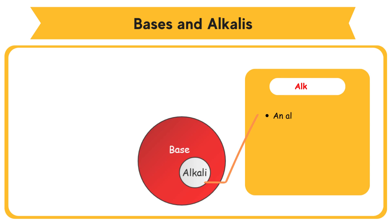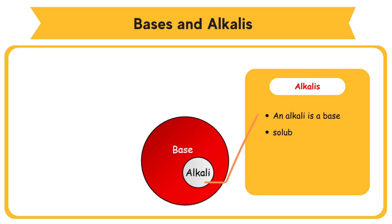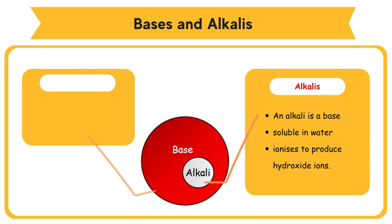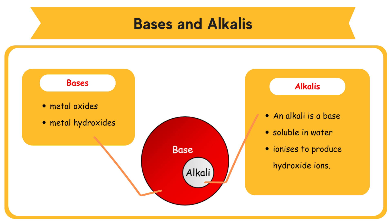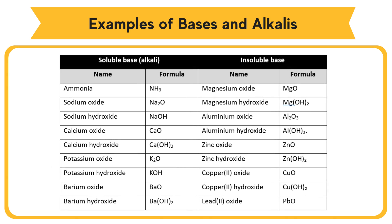Alkali: an alkali is a base that is soluble in water and ionizes to produce hydroxide ions. Bases include metal oxides and metal hydroxides. Examples of bases and alkalis are provided.